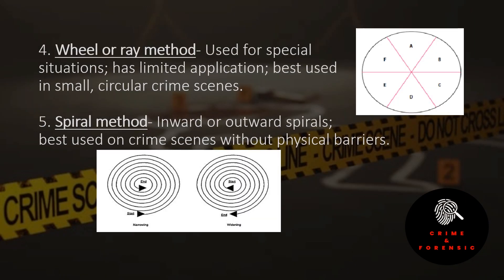The ray or wheel method is used for special situations and has limited application — best used in small and circular crime scenes. The searcher starts from a center focal point and conducts the search outward in a circular manner. The spiral method involves conducting the search in an inward and outward spiral manner.